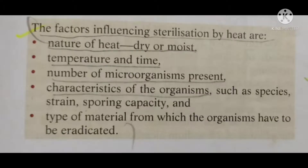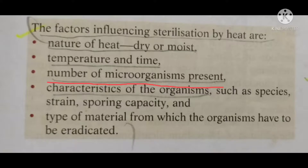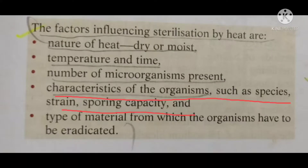When using heat as a sterilization method, its effectiveness depends on several factors: first, the type of heat — whether dry heat or moist heat; second, the temperature and time — at what temperature we are sterilizing and how long it takes; third, the number of microorganisms present — if the surface or article contains a large number of microorganisms, it takes longer time and higher temperature. Additionally, the type of microorganism — species, strain, and their endospore-forming capacity — also influences sterilization efficiency.